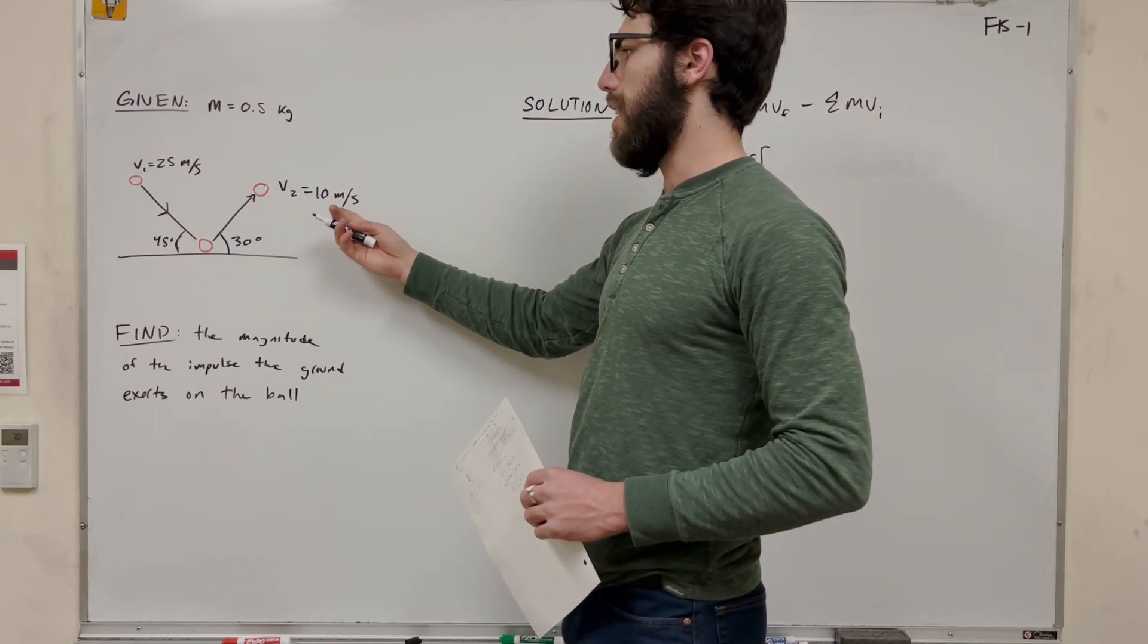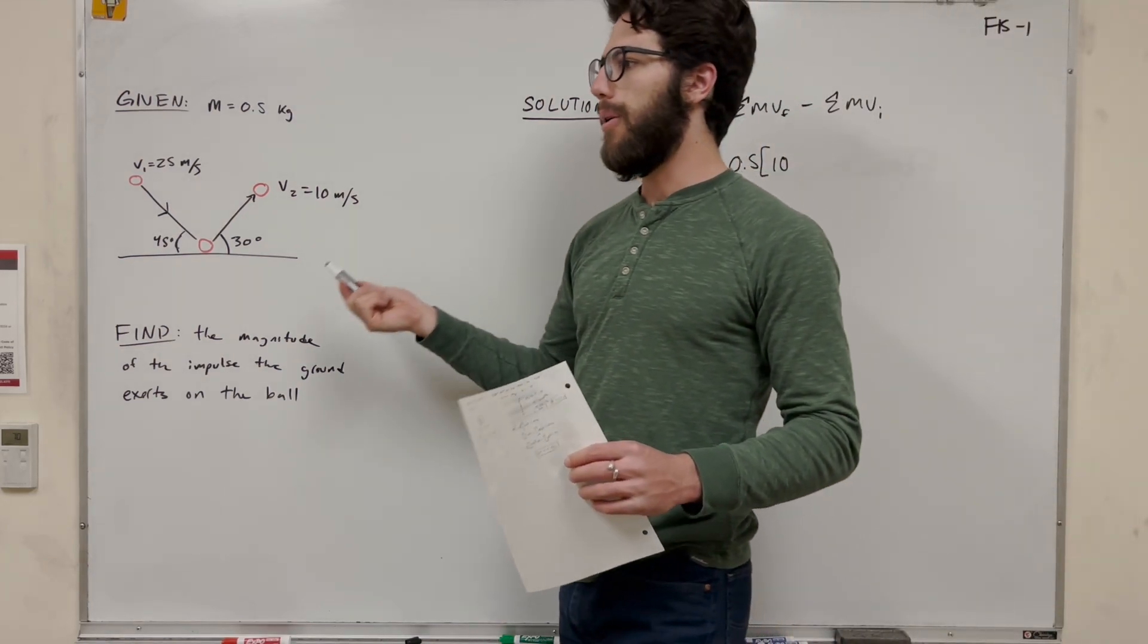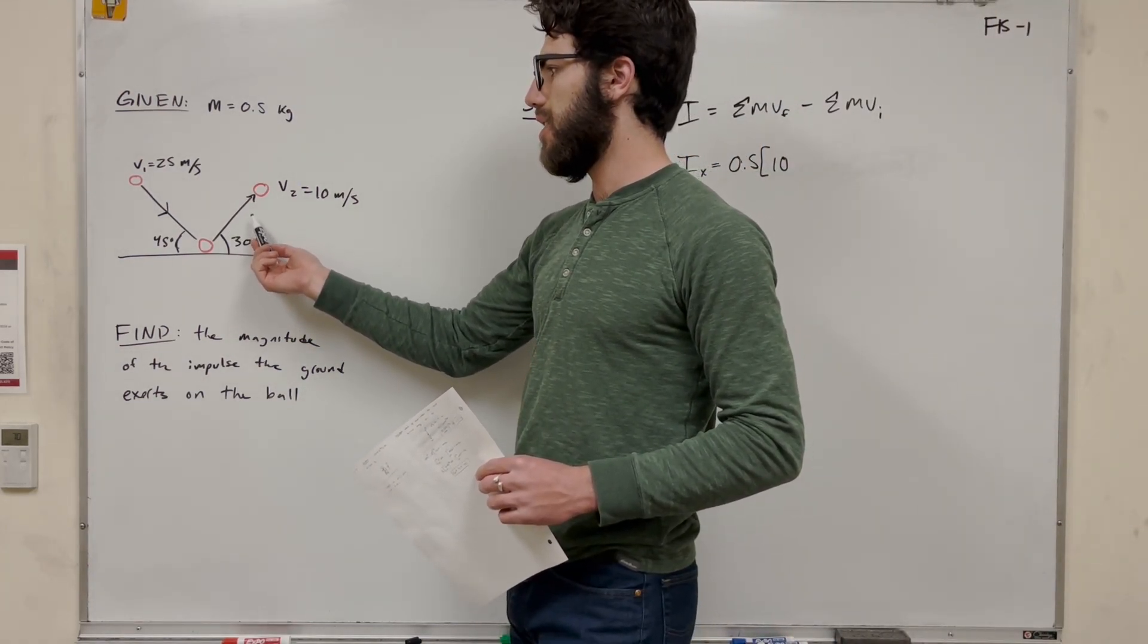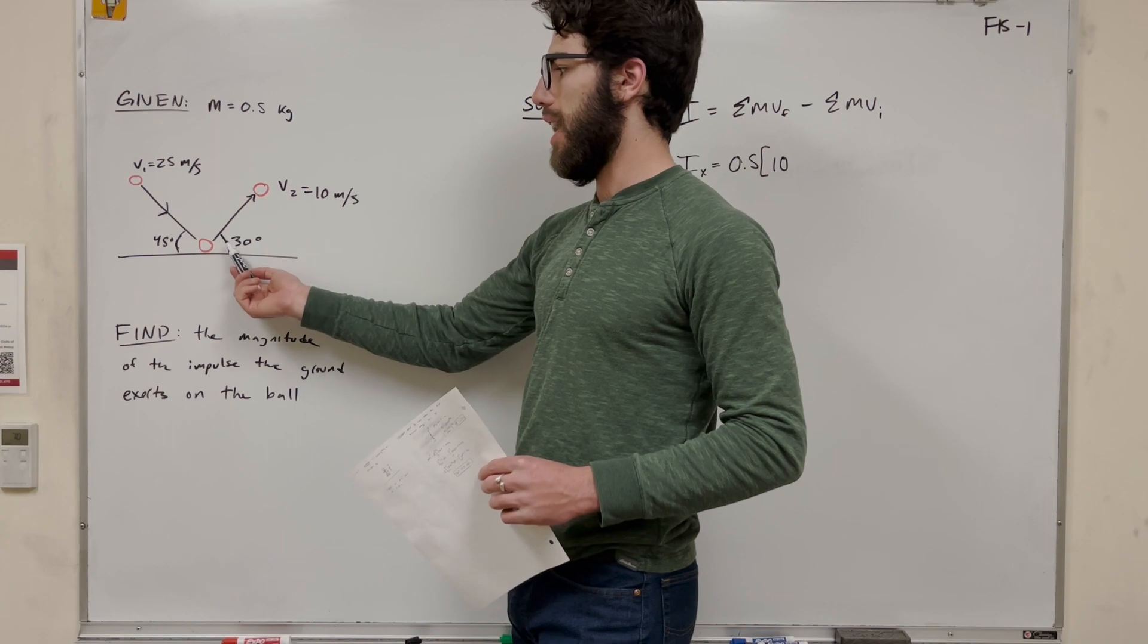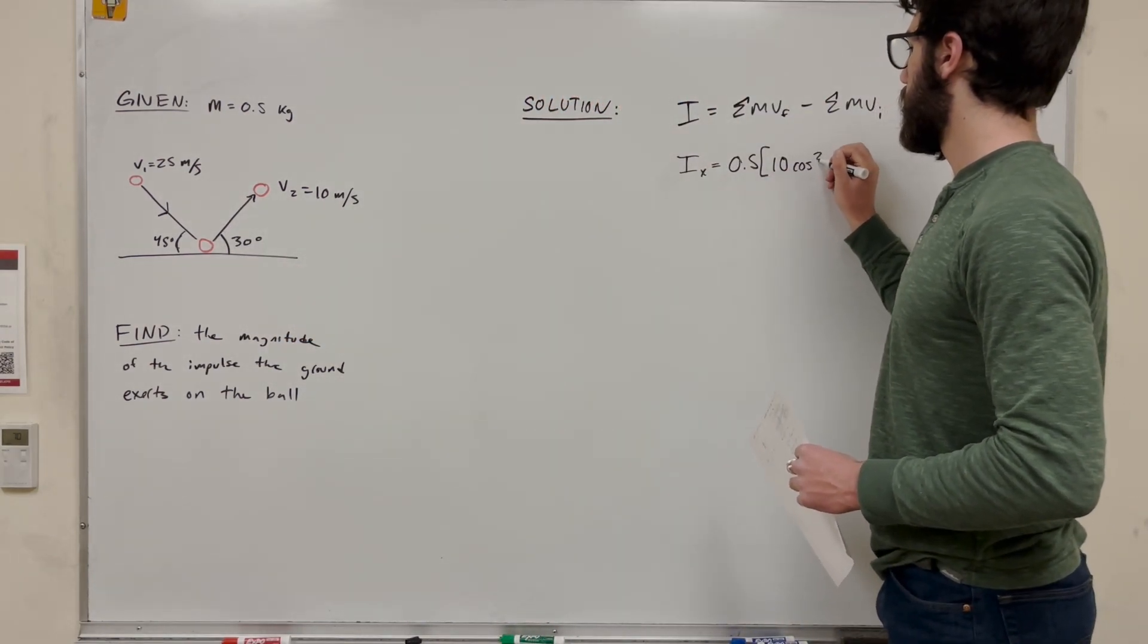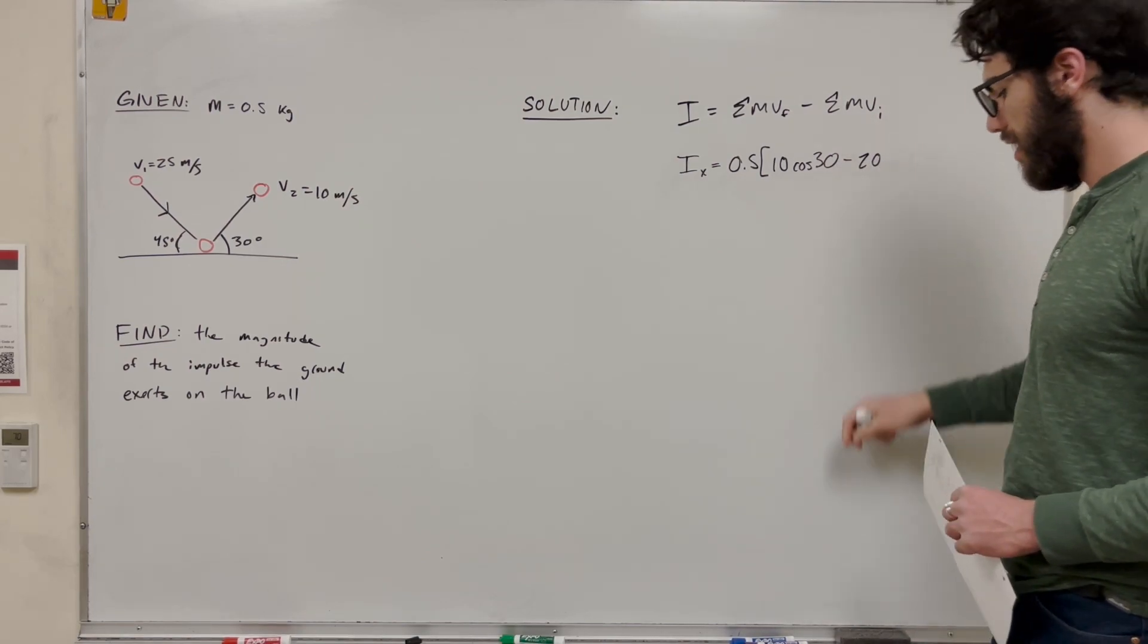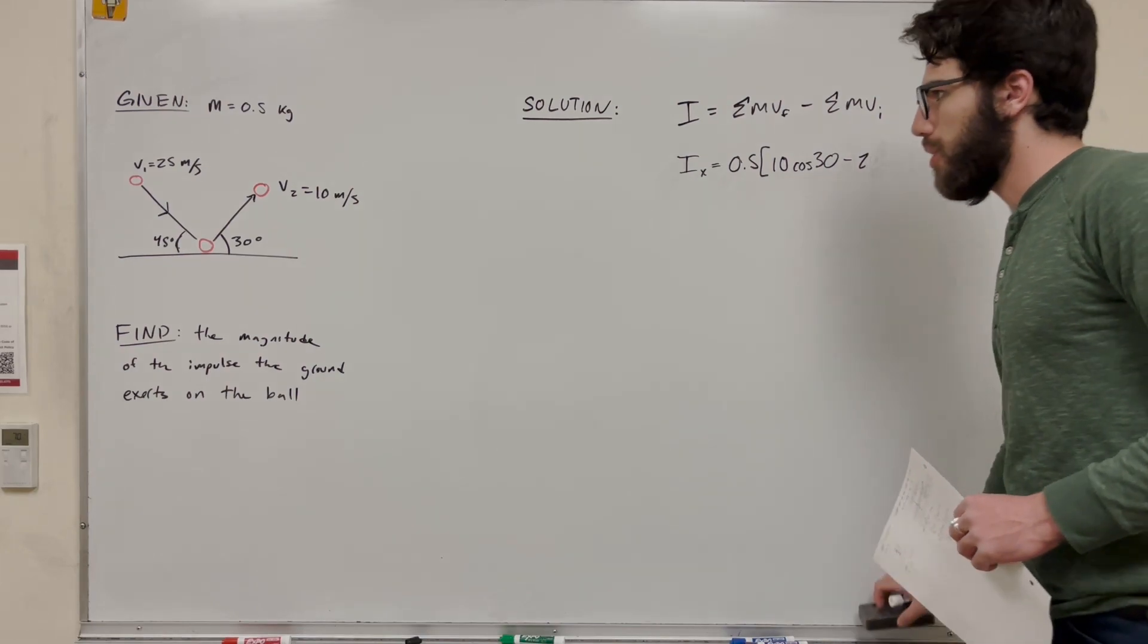So velocity final is 10 meters per second. Let's go ahead and put the 10 there, but then we need to adjust for the x direction. Right now we don't want to do this - this is going to form a triangle vector. We can go ahead and take cosine of 30 to find the x direction. We need to subtract that from the velocity initial. That's going to be 25 cosine.